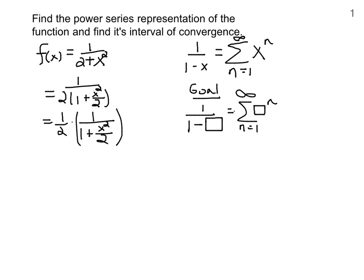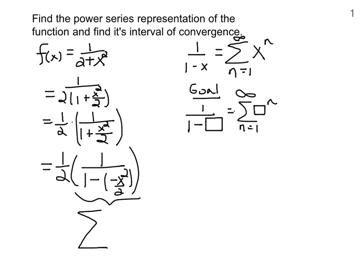So we have the 1 in the numerator and the 1 in the denominator — we just need the minus sign. If you have a plus and you need a minus, you make it minus the negative. So we're looking at one half times 1 over 1 minus negative x squared over 2. Now we have all 3 elements: 1 over 1 minus something, which can be represented as a summation where that something is raised to the nth power.